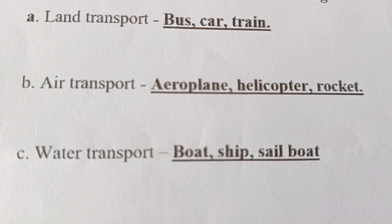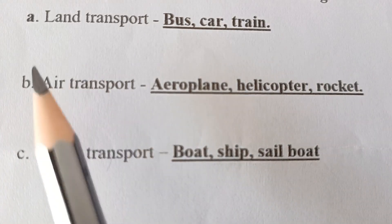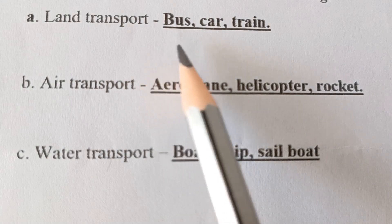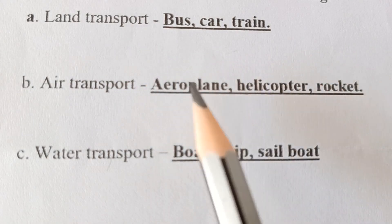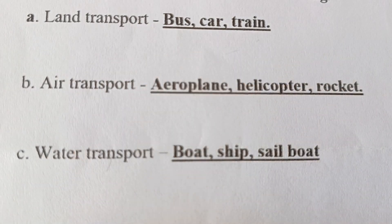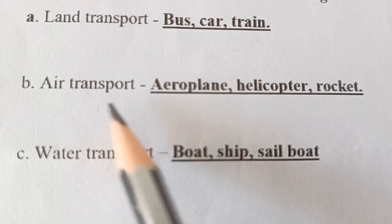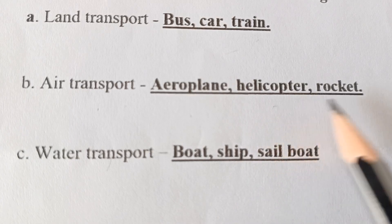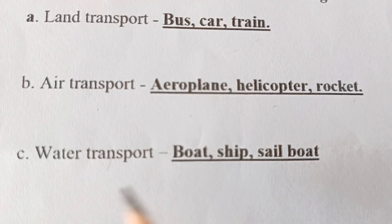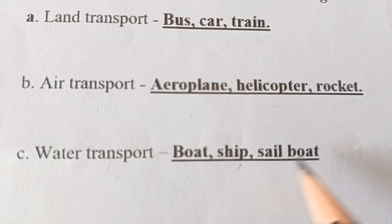The next question is: Write two examples of the following. Land transport — examples include vehicles that travel on land. Air transport — Aeroplane, Helicopter, Rocket. Water transport — Boat, Ship, Sailboat.